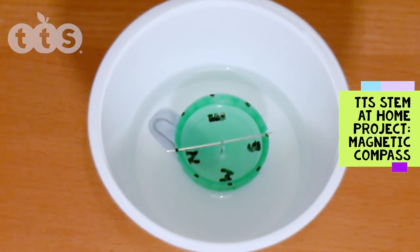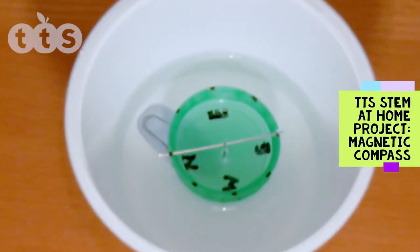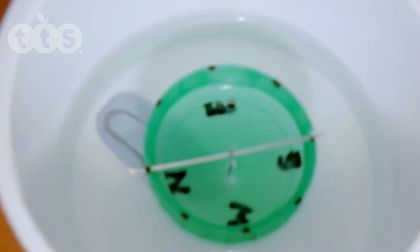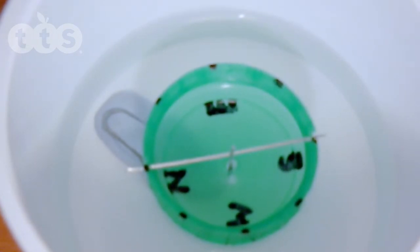This is what we're going to make today. It's a magnetic compass. When you magnetize the needle, it floats round until the needle points north-south. You can make it turn by putting magnetic materials near it, like this pair of scissors.